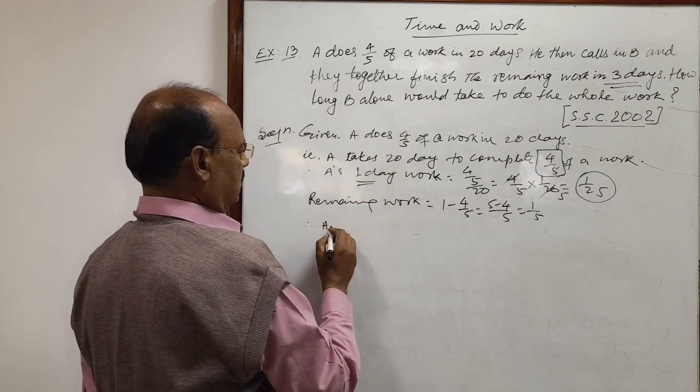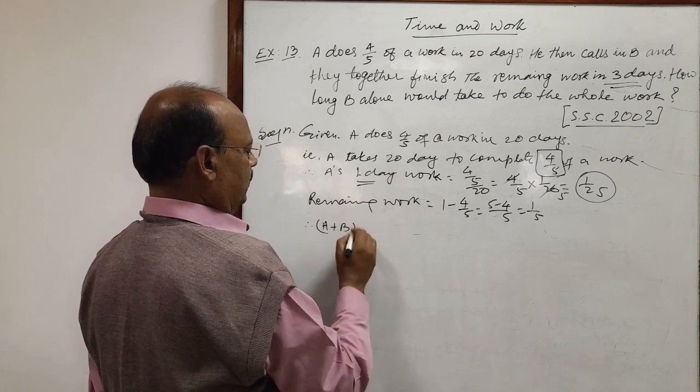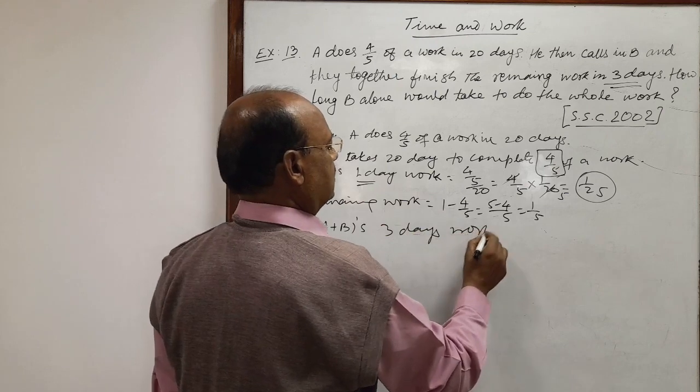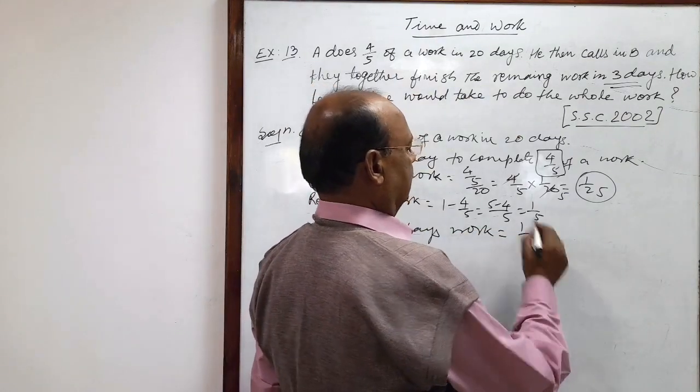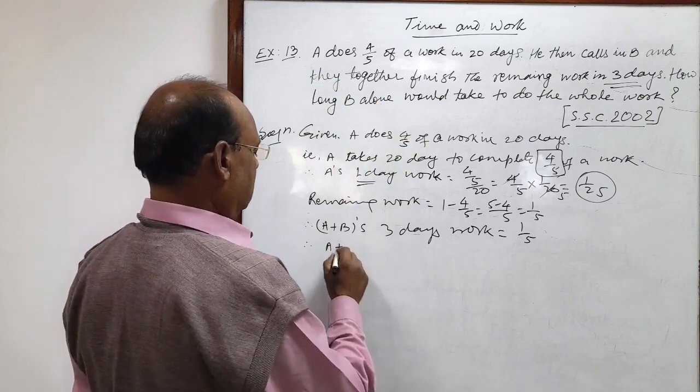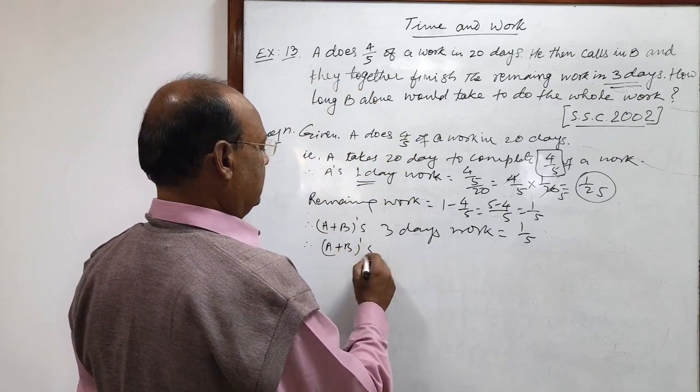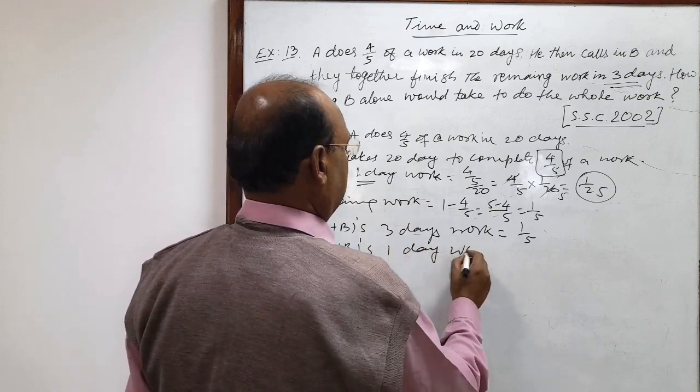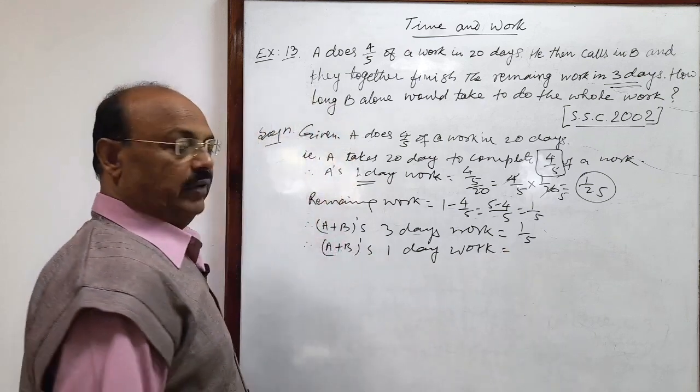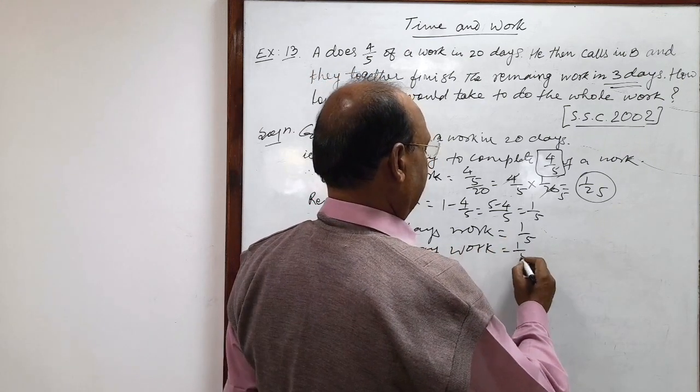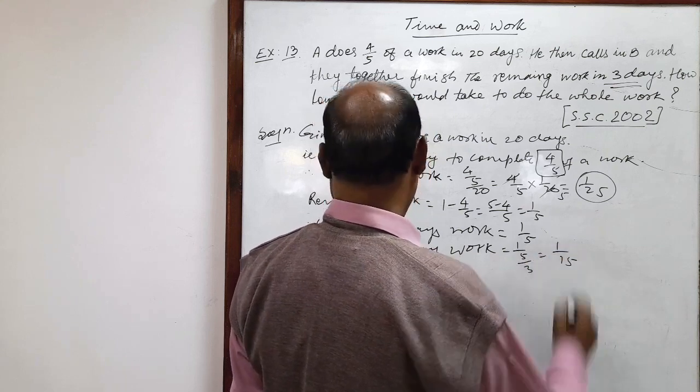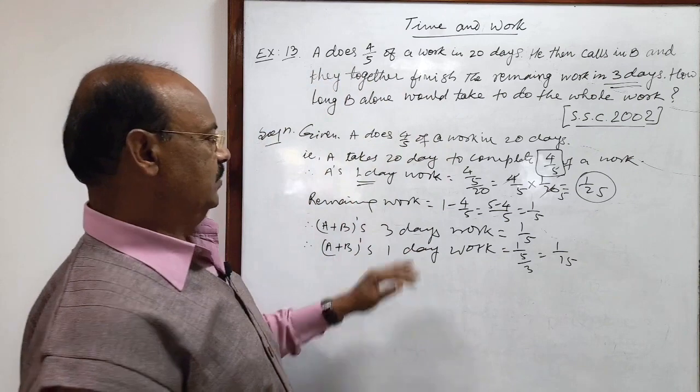Therefore, A plus B's 3 days work is 1 by 5. So therefore, what is A plus B is 1 by 5 divided by 3, this is equal to 1 by 15. This is A plus B's work.